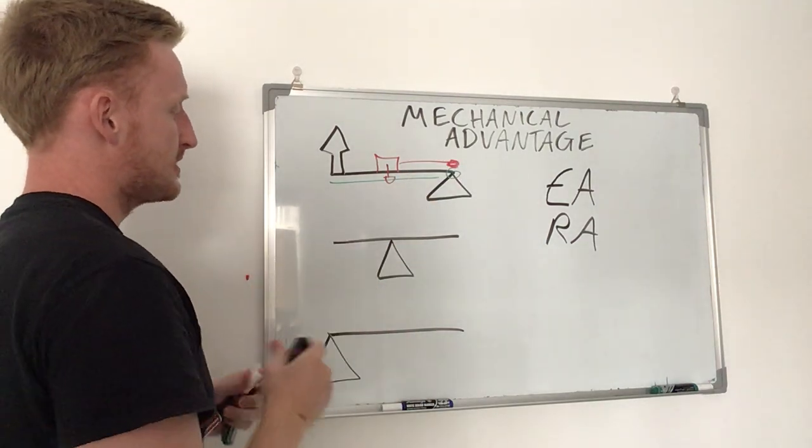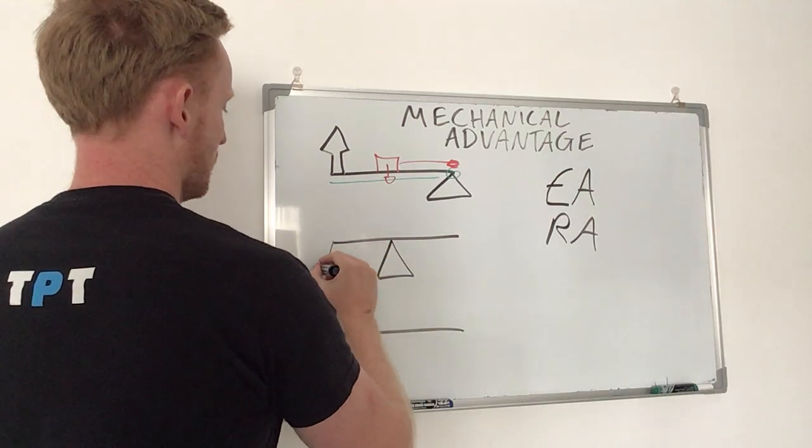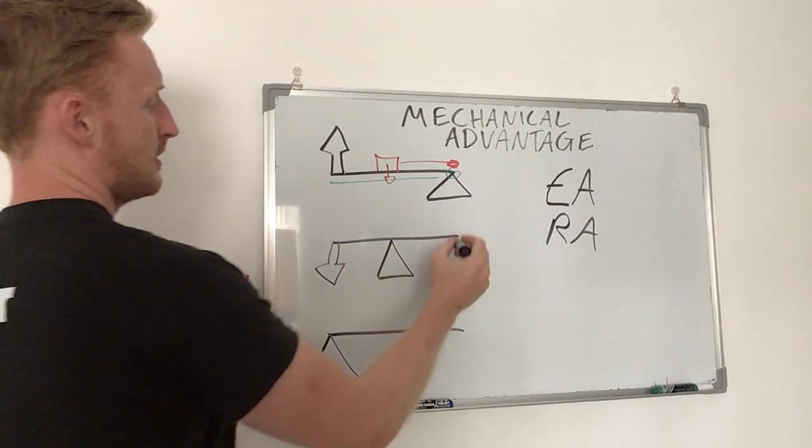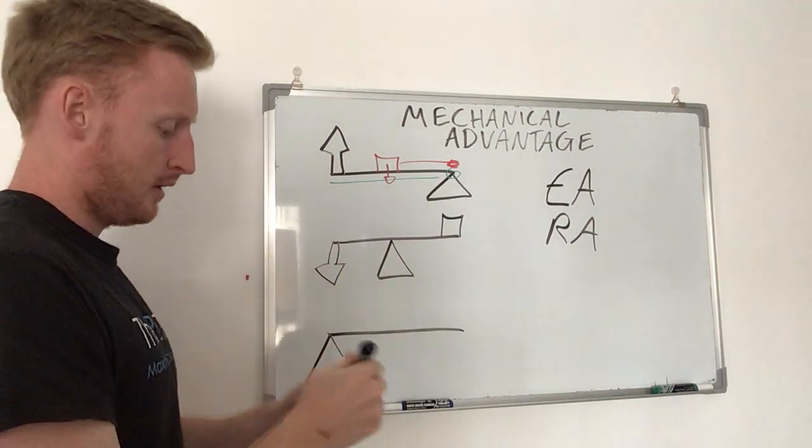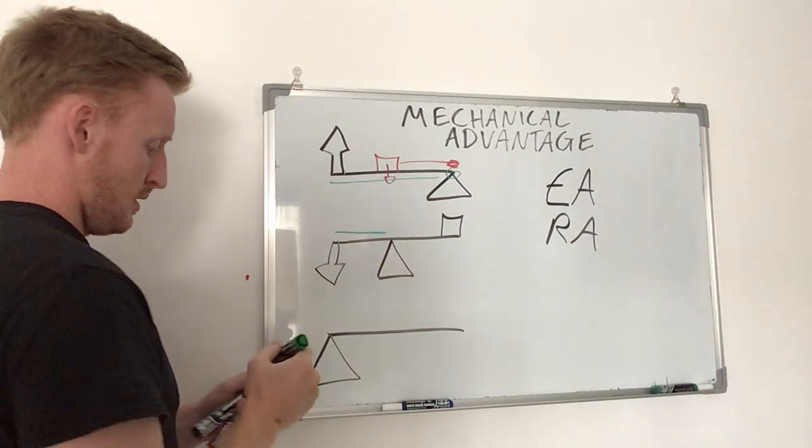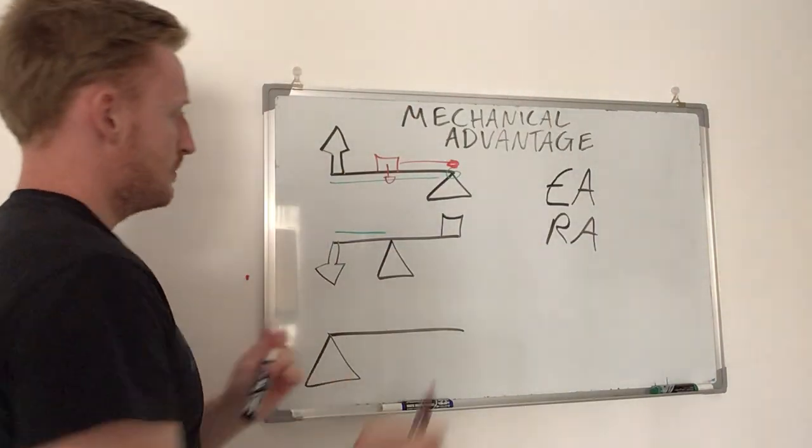So if we were to change up these lever systems with the effort at one end, load at the other, we could then calculate the effort arm and the resistance arm.